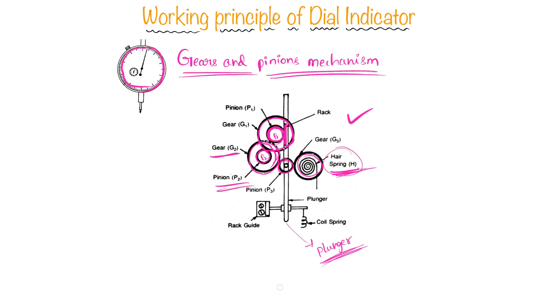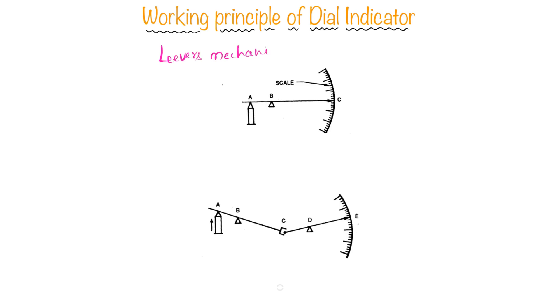Let us see the working principle of lever mechanism in the dial indicators. In this type of dial indicator, the principle is quite simple. This is the plunger and the needle is directly connected with the pivoted point B.